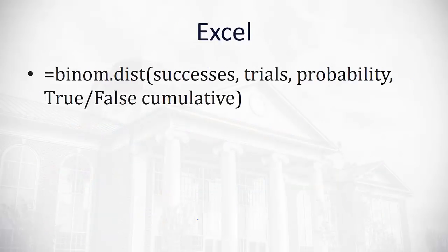Excel can make these calculations easier. The binomial distribution in Excel uses the function BINOM.DIST. The first number represents the number of successes we want, the next is the number of trials, then the probability of any one success, and finally true or false. If we use true, it does a cumulative sum including all values below; if false, it gives us the probability of that specific value only.